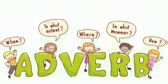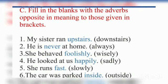Let's continue the exercise based on adverbs. In this, we have to fill in the blanks with the adverbs opposite in meaning to those given in brackets. First sentence: my sister ran downstairs. Downstairs means down the stairs, so its opposite is upstairs, and the sentence will be: my sister ran upstairs.